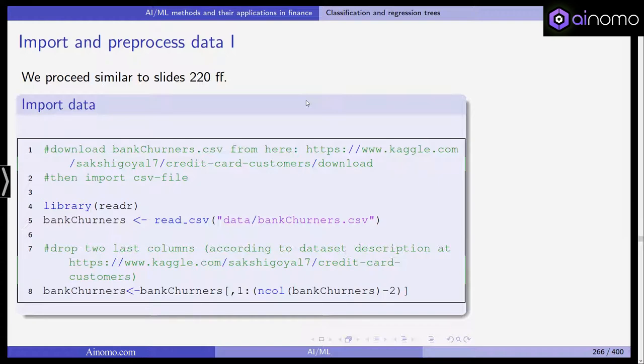We dropped the last two columns according to the dataset description. Bank churners is the object we create from the imported object. In line eight here, we are dropping the last two columns. We are only using columns one through the number of columns minus two. For example, if the original object included ten columns, we are now using only the first eight ones.